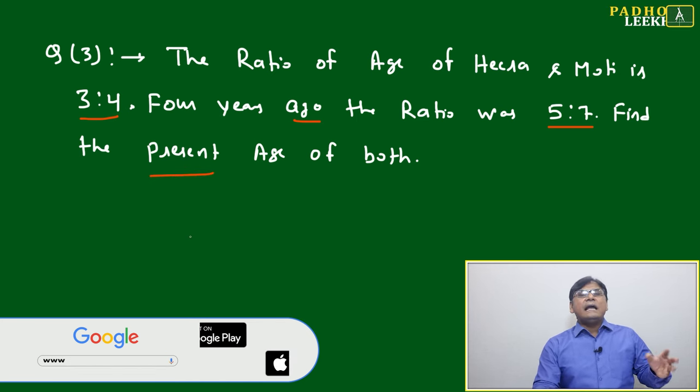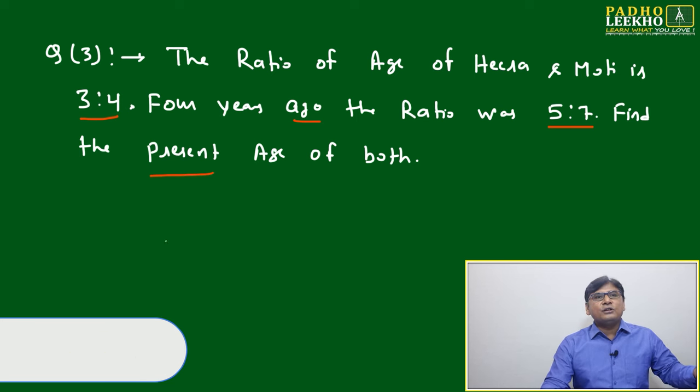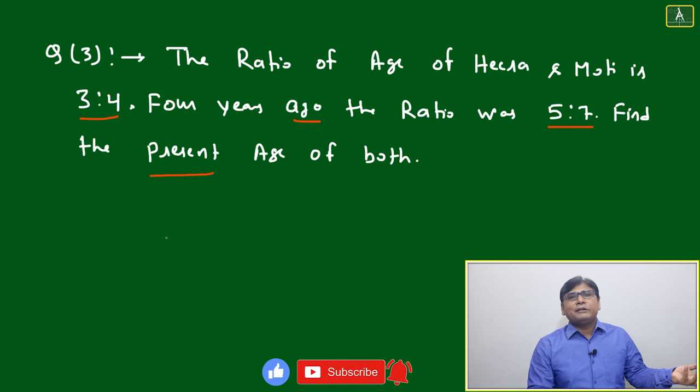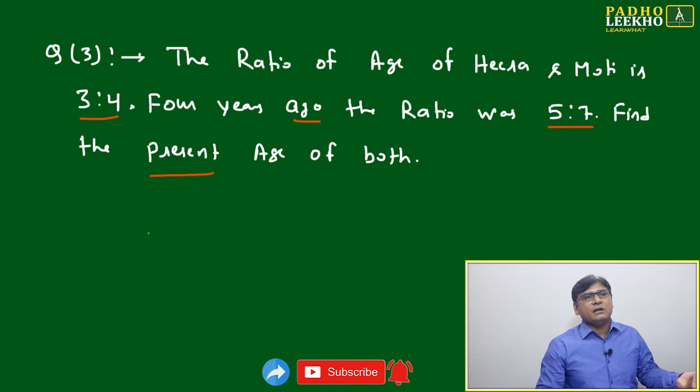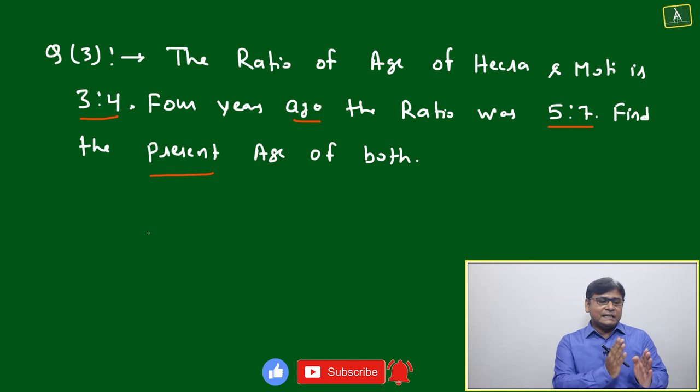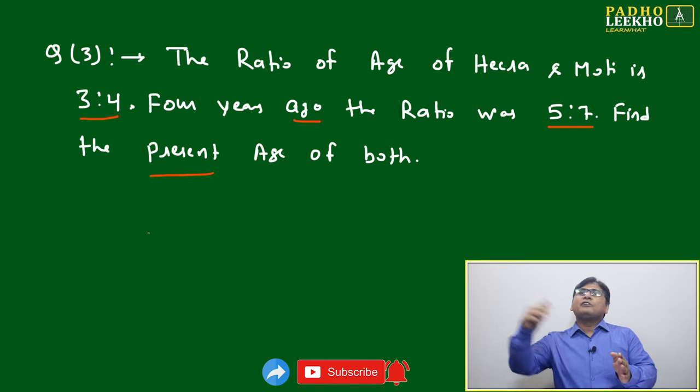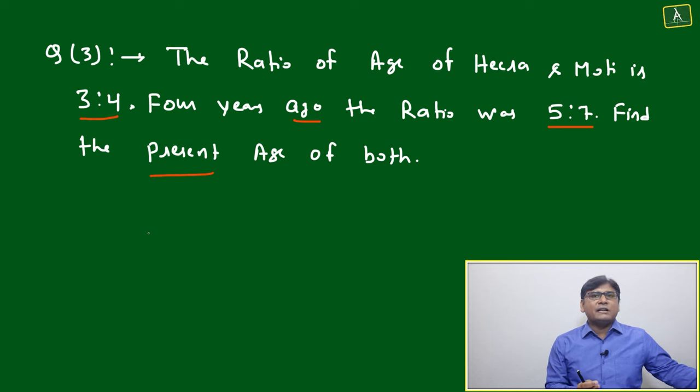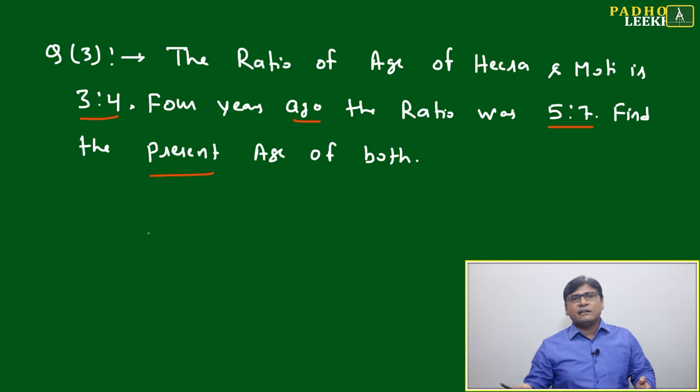This is an age related question, age related question based on the ratio. It will be always a very, very, you can say, favorite question of any of the aptitude based questions. They will just make the sequence: present age, after four years, before five years, after ten years. Once the daughter has taken the birth or once the son has taken the birth, whatever case possible will be there, they can ask.